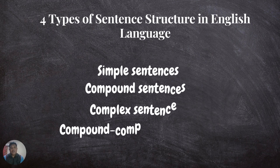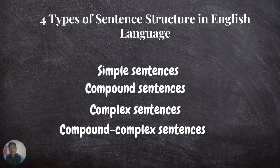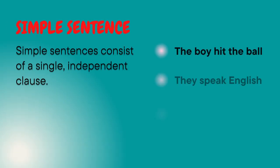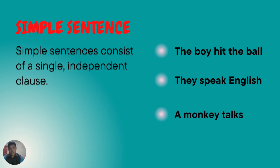Now we come to the main topic of this presentation. There are four types of sentence structures in English: the first one is a simple sentence, the second is a compound sentence, the third one is a complex sentence, and the last is the compound-complex sentence. Each of the types will be elaborated one by one. Now we begin with the simple sentence.